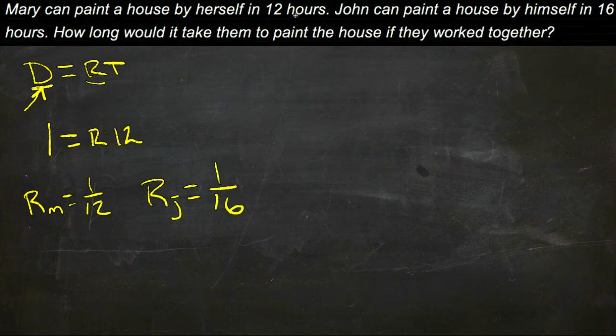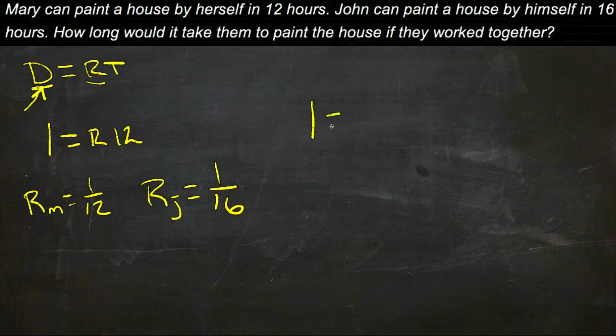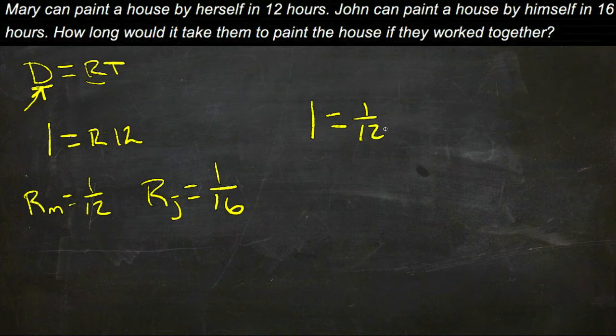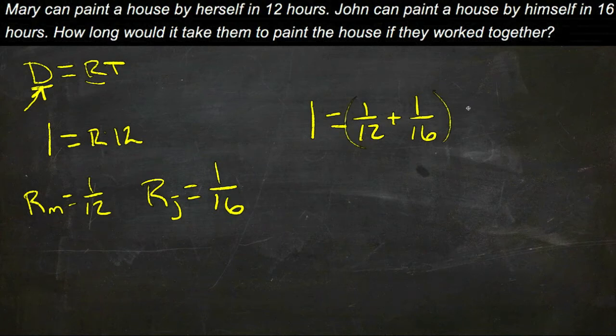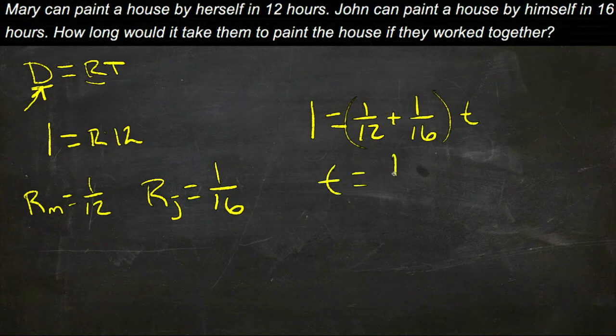So if our whole job then, the two of them together, is 1 house, then we have 1 house is going to be the two rates added together, 1/12 plus 1/16 times some amount of time. We don't know how long it's going to take them. So we multiply both sides by T, and we'll get T equals 1/12 plus 1/16.